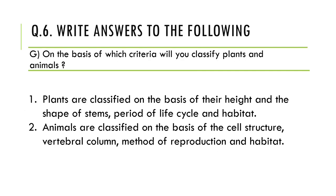The next question is: on the basis of which criteria will you classify plants and animals? Plants are classified on the basis of their height, shape of the stem, period of life cycle, and habitat. Plants differ tremendously in height, and the shape of stem varies — some plants have very fragile, hollow stems while some have very huge stems. The life cycle and habitat — the place where the plant grows — are also different for each plant.